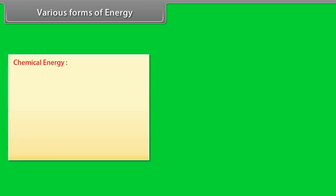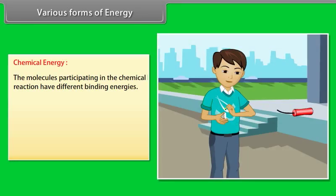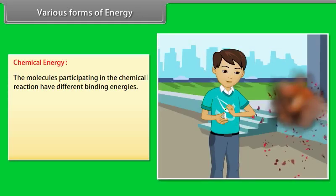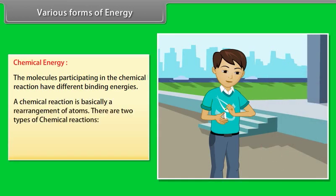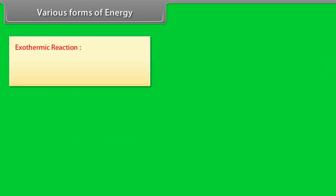Chemical energy: It arises from the fact that the molecules participating in the chemical reaction have different binding energies. A chemical reaction is basically a rearrangement of atoms. There are two types of chemical reactions: Number 1, exothermic reaction, and number 2, endothermic reaction.